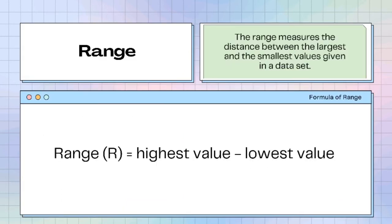The first one is the range. The range measures the distance between the largest and the smallest values given in a data set. The formula of range is: R equals the highest value minus the lowest value.